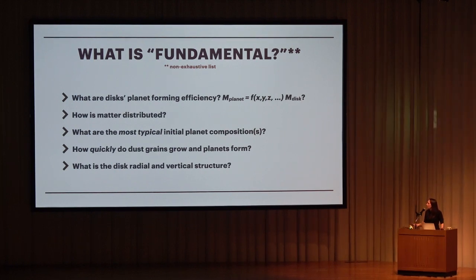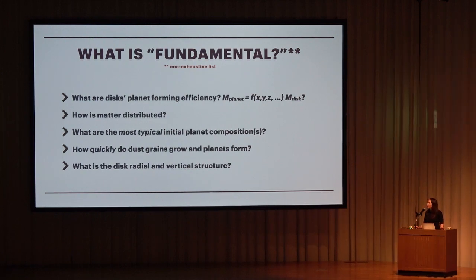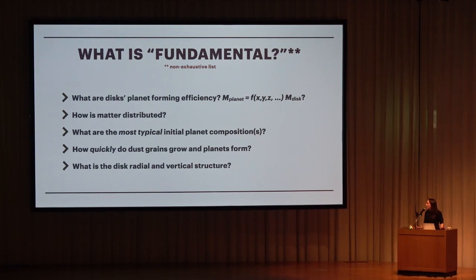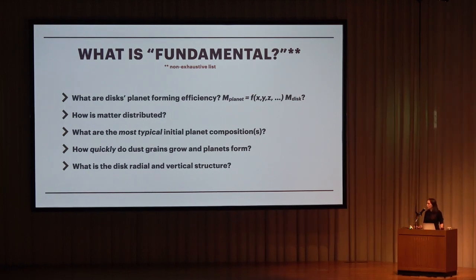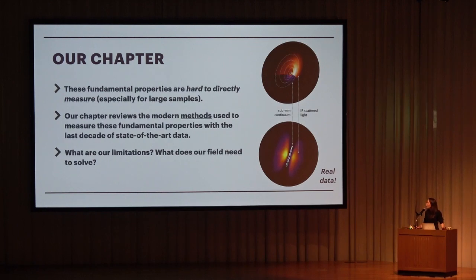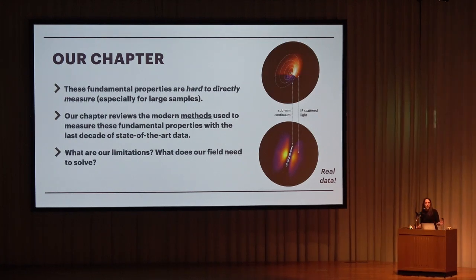We want to know where the matter is — do we expect a lot of mass at large orbits, and is wide-orbit giant planet formation efficient? We also want to understand what the typical compositions of planets are as they emerge out of disks, both solid and icy phases. We want answers on time scales: when do grains grow? How quickly do dust grains grow and planets form? And we want to know the radial and vertical distribution of disk mass, and how that affects composition and planet-forming conditions. All of these questions are incredibly hard to measure, even for a single source, much less a very large sample.